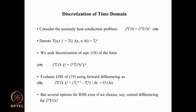Let us consider the unsteady heat conduction problem given by equation 18: ∂T/∂t equals α times ∂²T/∂x², where capital T is the temperature and α is the thermal diffusivity, taken as 1 in this case. This is a one-dimensional unsteady heat conduction problem with thermal diffusivity equal to 1.